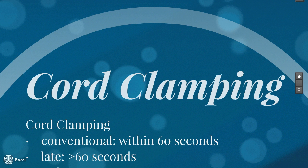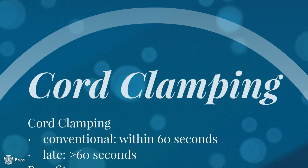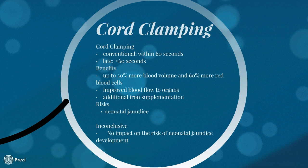Cord clamping has been under current debate over whether it can play a role in the development of neonatal jaundice. Cord clamping occurs after delivery, usually within the first 60 seconds. Late cord clamping is when the clamping occurs after more than 60 seconds, and the risks and benefits of this practice have been speculated, especially regarding its potential as a risk factor for neonatal jaundice. Some studies have found benefits to late cord clamping — it may provide the baby with up to 30% more blood volume and 60% more red blood cells, which provides better blood flow to the organs.